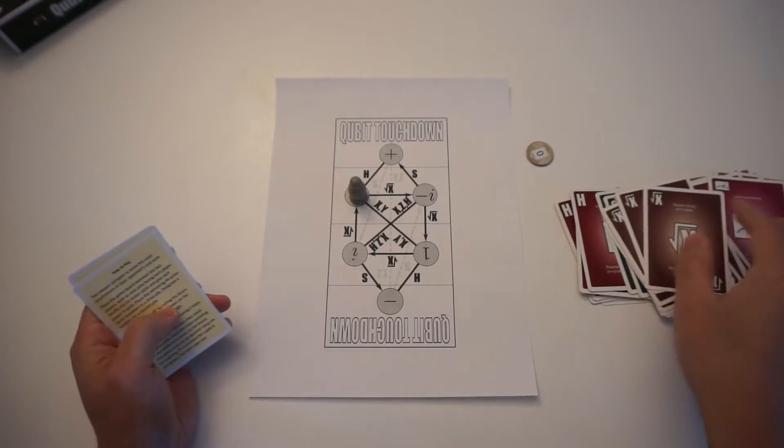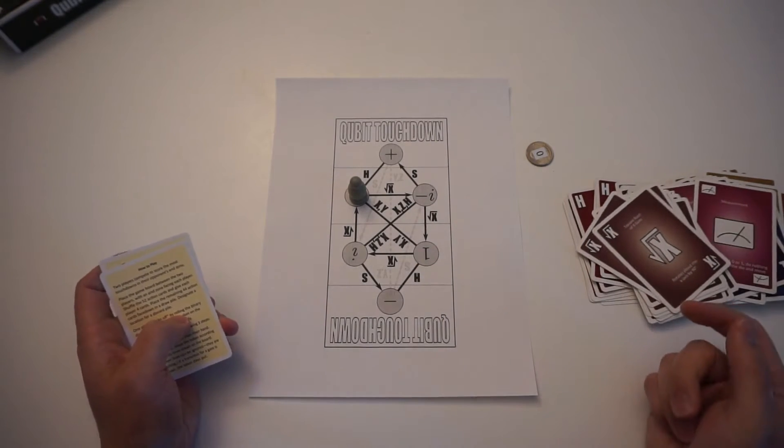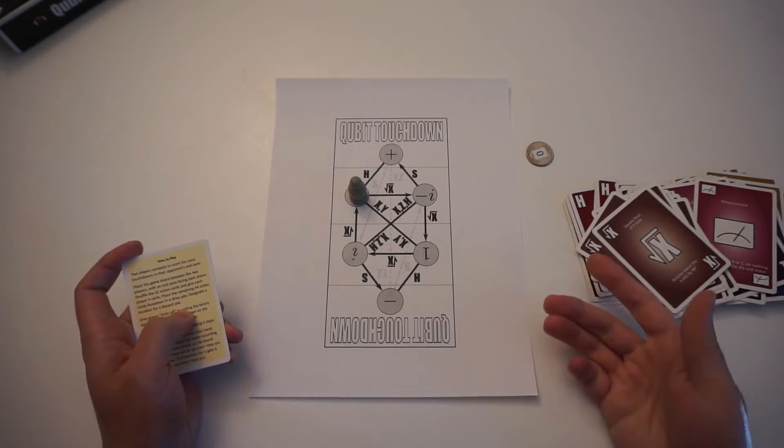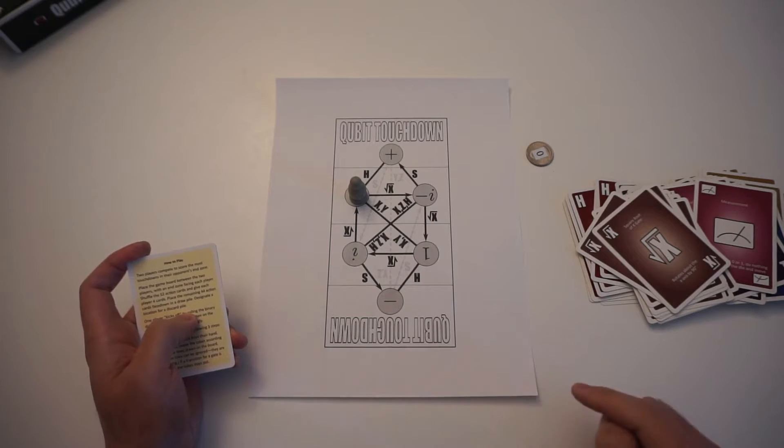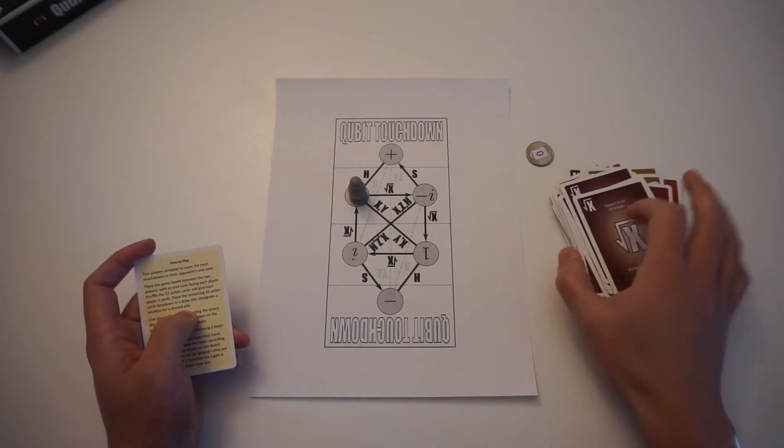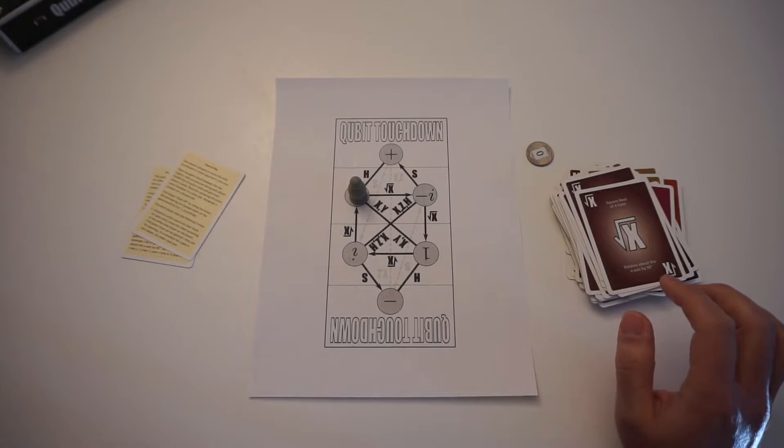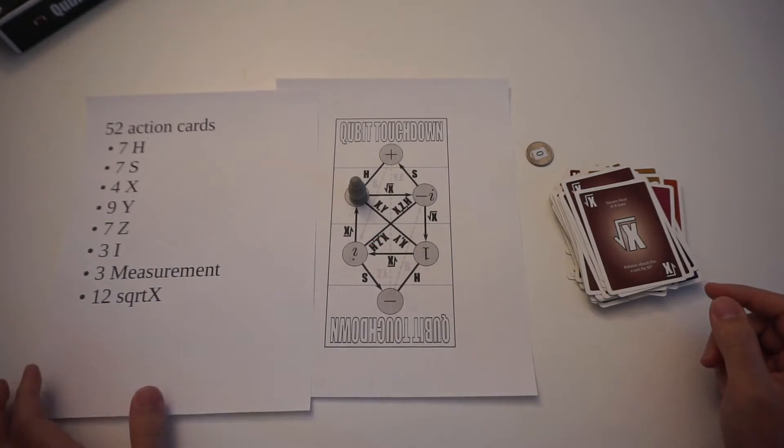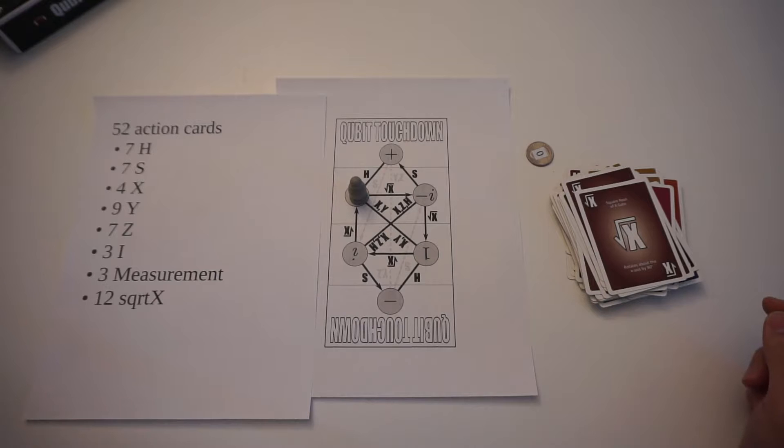And these correspond to the different movements. I have a separate video explaining how to actually play the game. This video is just on how to make the pieces. So to make these cards, there's some different approaches.